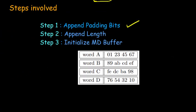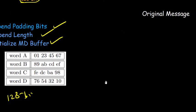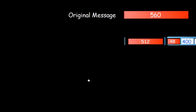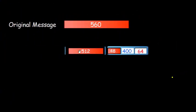Now regarding the steps involved in the message digest algorithm: the first step is appending padded bits, then appending length, then initializing the MD buffer, and then performing some functions so that the final output is 128 bits. Let us take an example — suppose the original message is 560 bits.